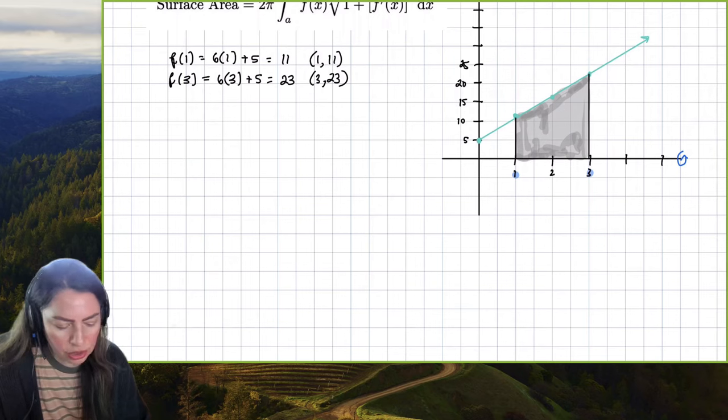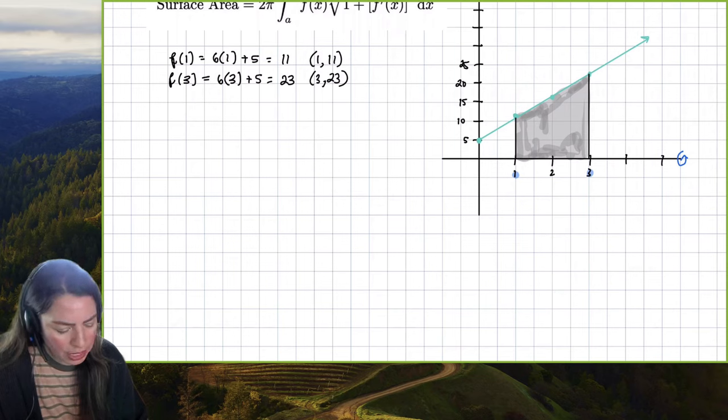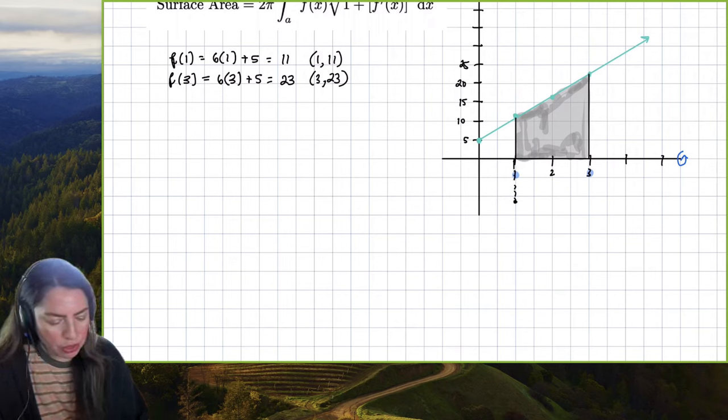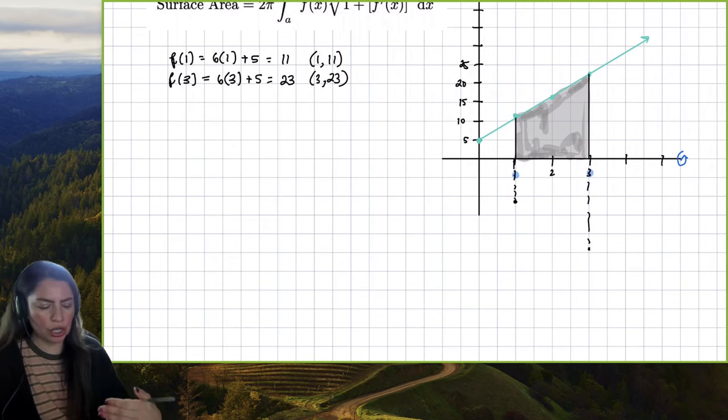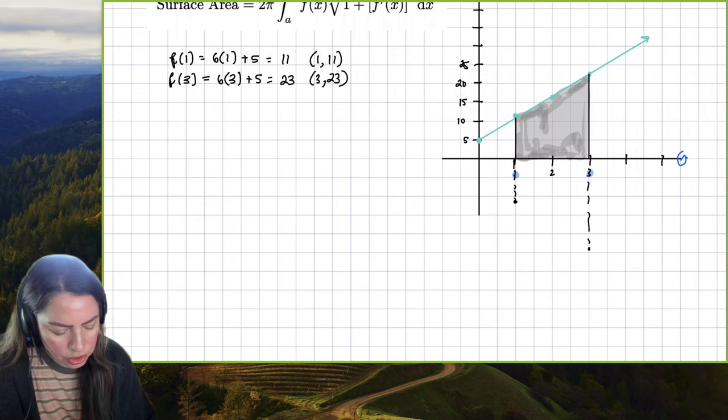We want to revolve this around the x-axis. So essentially it's going to look identical, right? So if this is going to be (1,11), the other point down here would be at the same right about right here. So I usually just dash it through. The (3,23), that would be about here and then you could just dash it. So you can kind of see the distance you're going to go. And then you can go ahead and start to turn it.